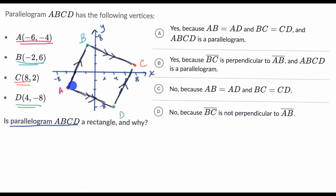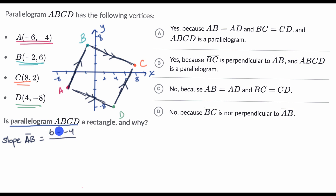What we really need to figure out is whether the sides intersect at right angles. To do that using coordinates, we need to find the slopes of the different line segments. The slope of segment AB equals change in Y over change in X: six minus negative four, over negative two minus negative six. That's ten over four, which is five halves.